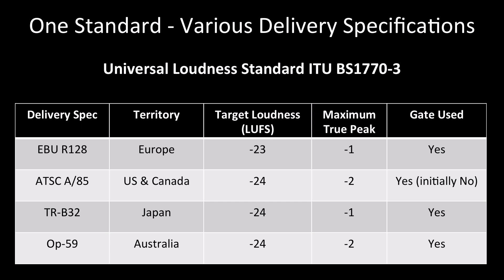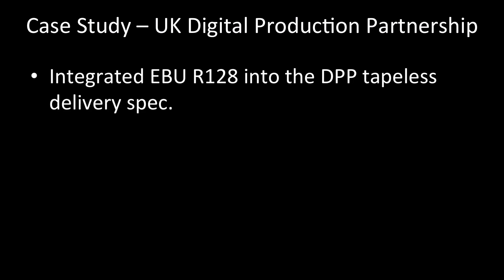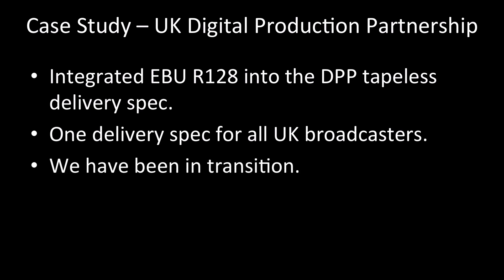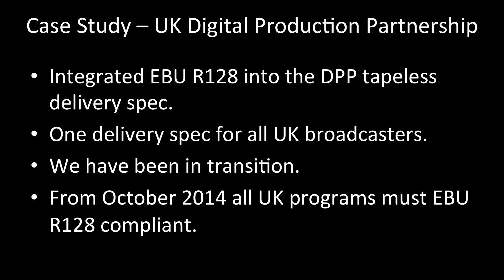For example, earlier versions of the A85 spec didn't specify the gate, but the gate is now in the current version of A85. Here in the UK, all the broadcasters got together and convened the Digital Production Partnership as part of a unified tapeless delivery format, and they included the EBU R128 into this delivery spec. This means in the UK, we only have to produce one mix to one spec for every UK broadcaster, which reduces the multiplicity of deliverables we used to have to produce. And as of October 2014, the EBU R128 is the standard to deliver all UK broadcast programmes, and we no longer normalise to peak level.